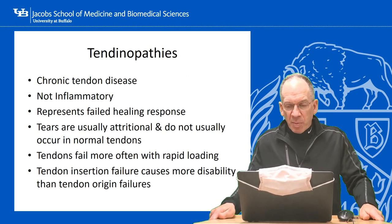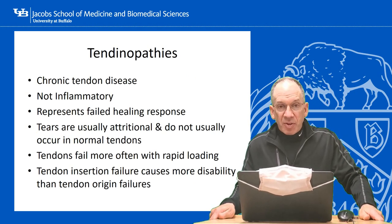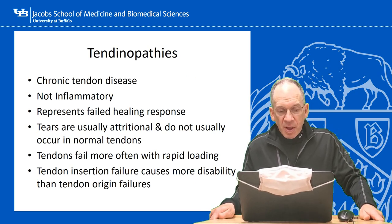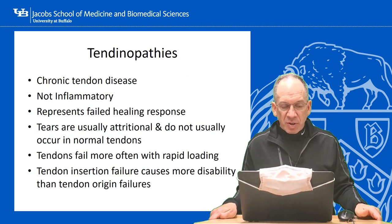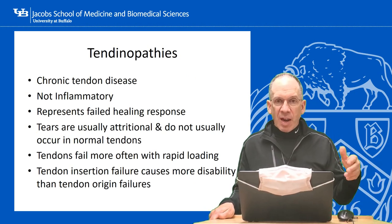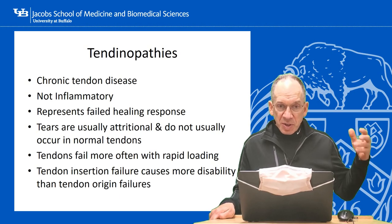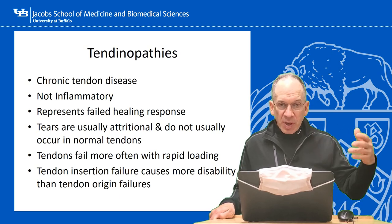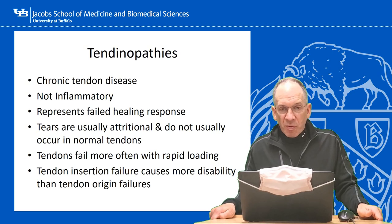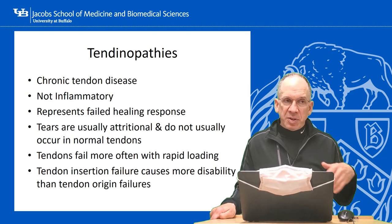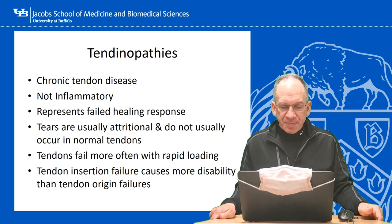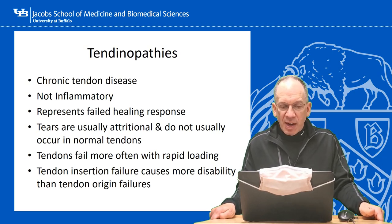That's it on enthesopathies. They are very common, not inflammatory, and degenerative in nature. Future research will likely focus on anti-aging medicine approaches — how to make these areas heal — probably through more cell-based treatments like fibroblast growth factor to stimulate healing. Now, moving on to tendinopathies.